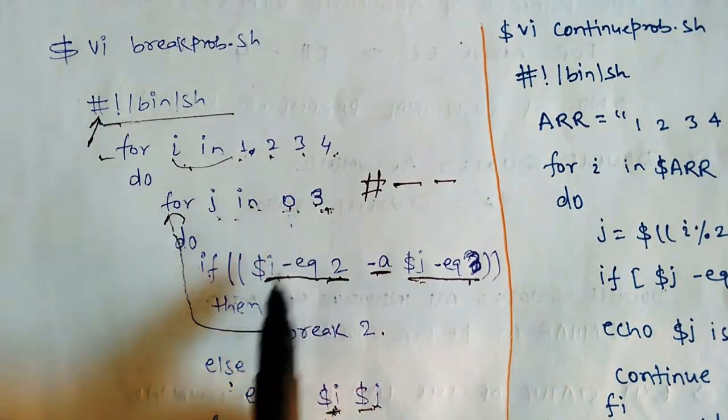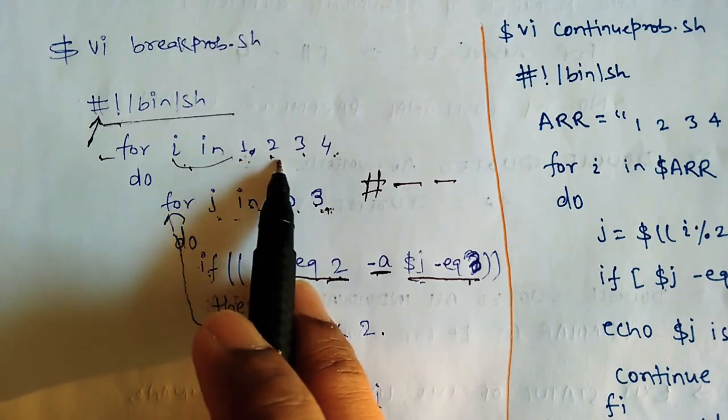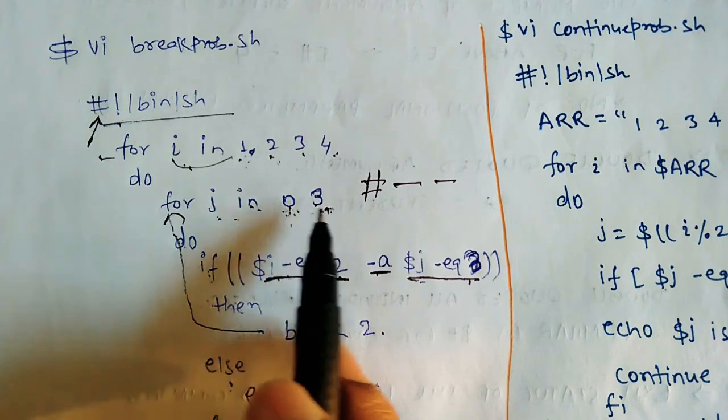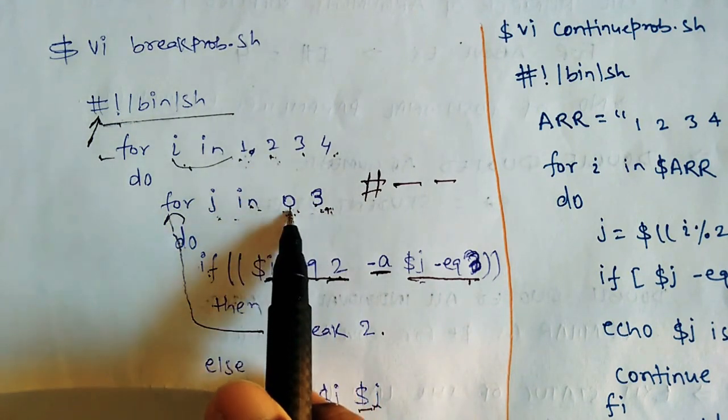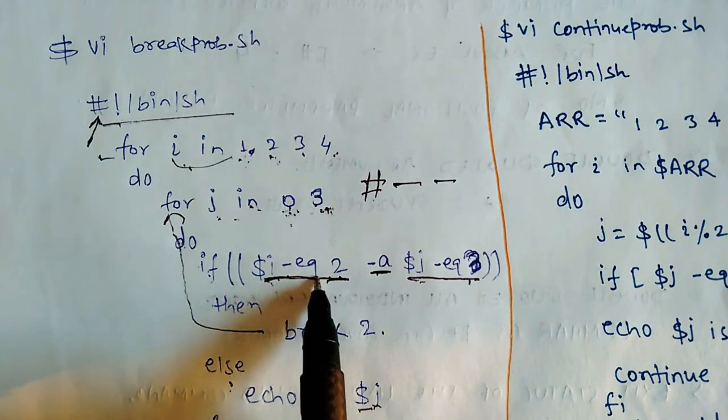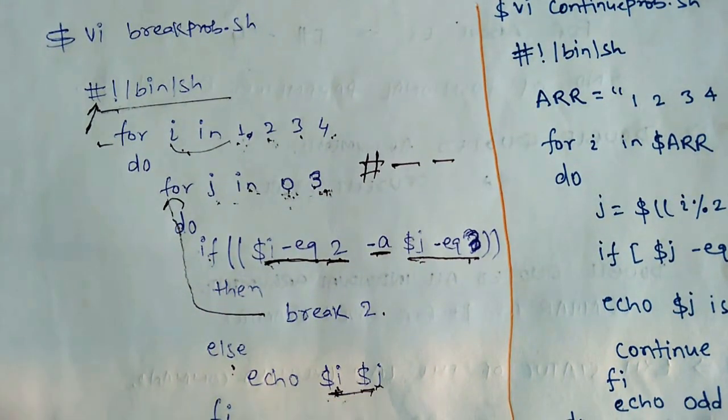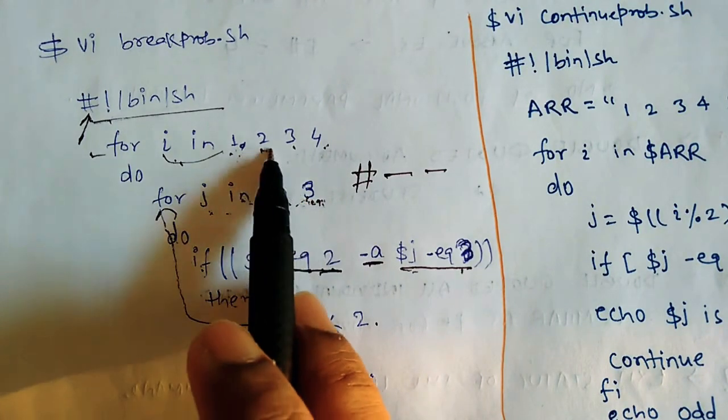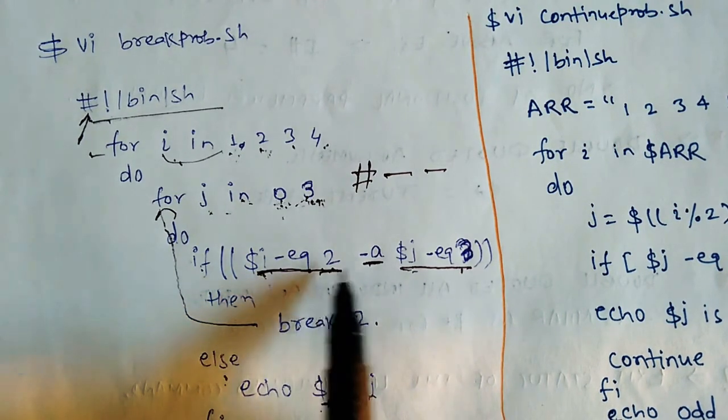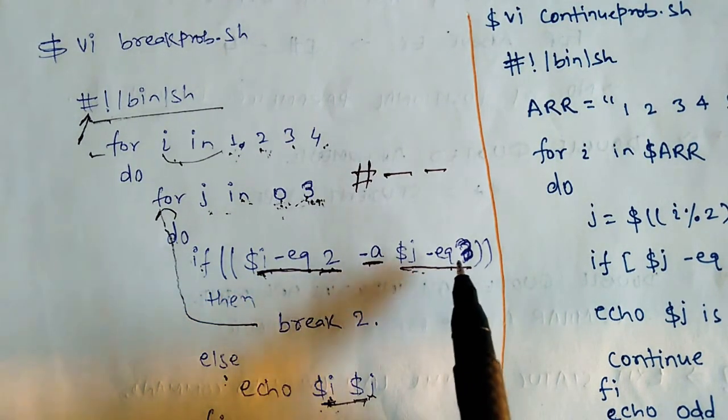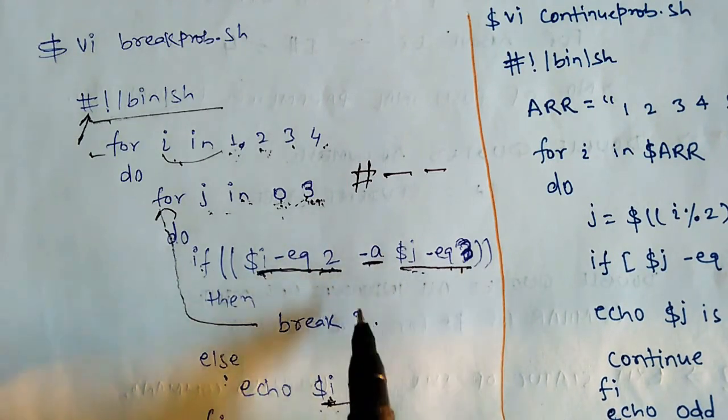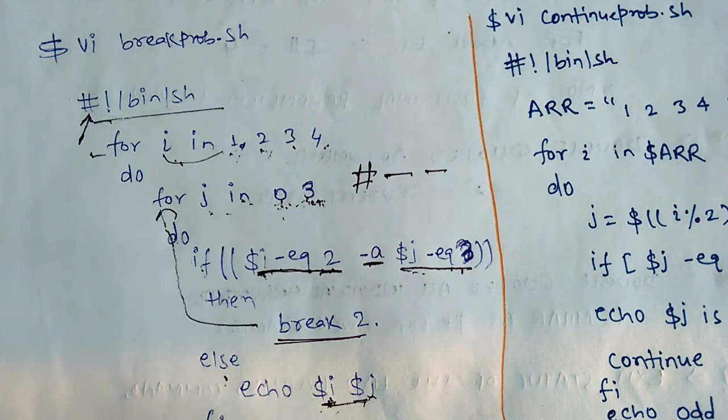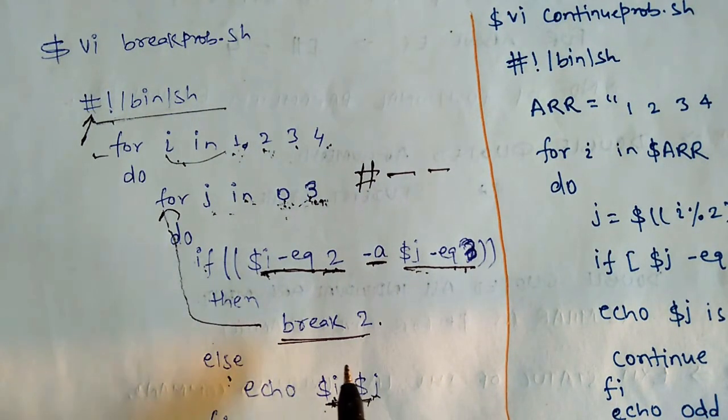So it will go to outer loop, so i value will become 2. Once again it will check for two different conditions, j value 0 and 3. When i value is 2 and this is 0, once again if condition is not going to satisfy, so 2 and 0 will be displayed. Now it will be 3, j value will be 3, i value is 2. So dollar i equal to 2 and dollar j equal to 3. Now we can see that here the condition is true. When it's true, we have written that break will happen, so it will directly go out of the loop.